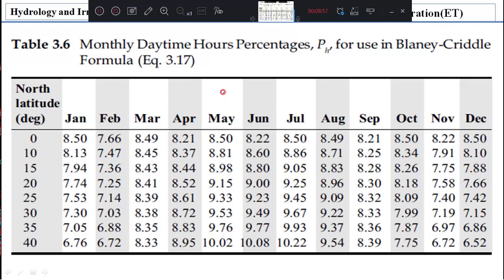This is the table given by Blaney-Criddle for pH calculation. Look at here, we have north latitude degrees: 0, 10, 15, 20, 25, 30, 35, 40 like that. Here we have north latitude only because we are in the north hemisphere. That's why we have only one table. If you are in the south hemisphere, then the table will be different. Now for all the months, he has given various values and out of them, we need to select.